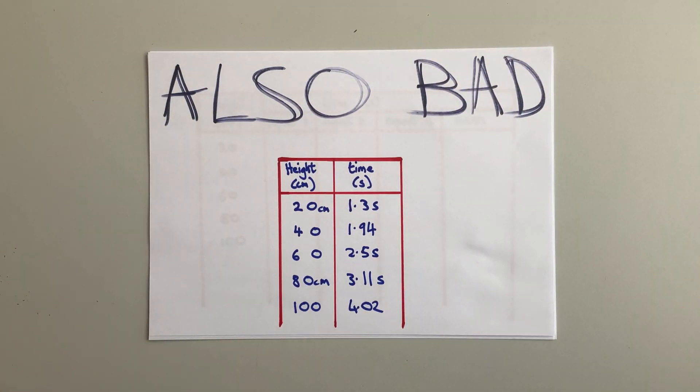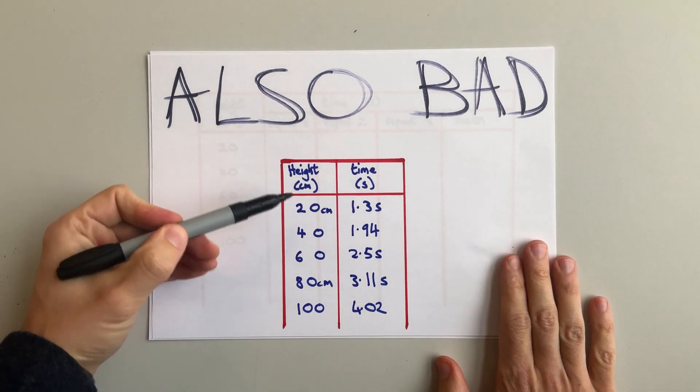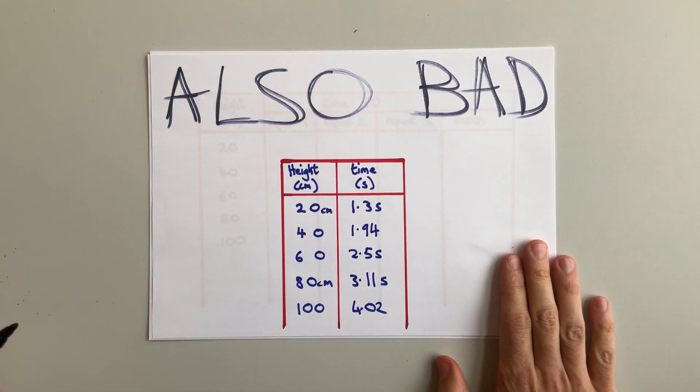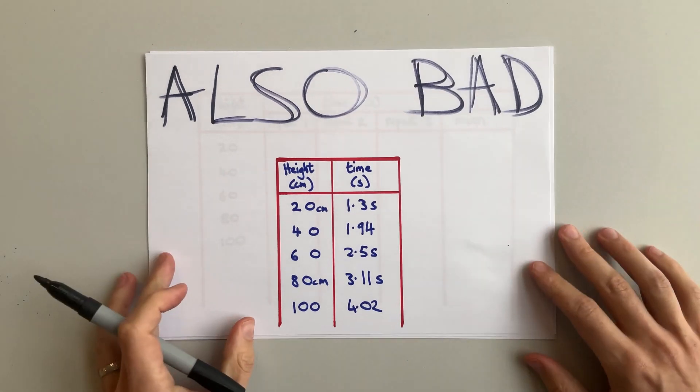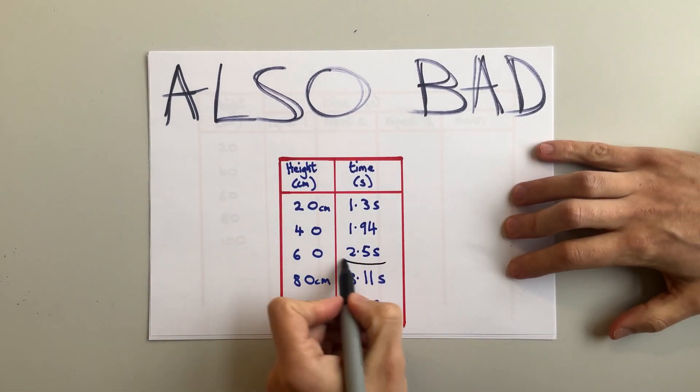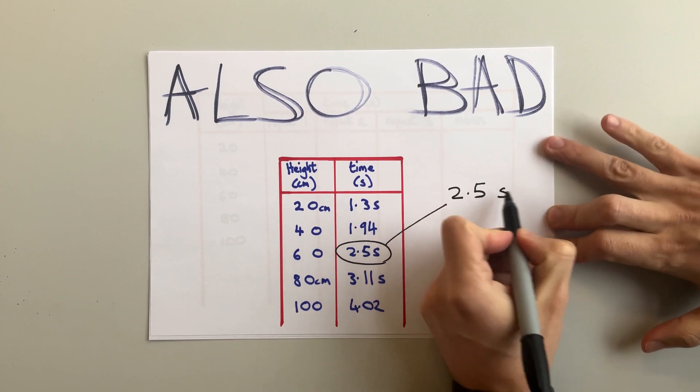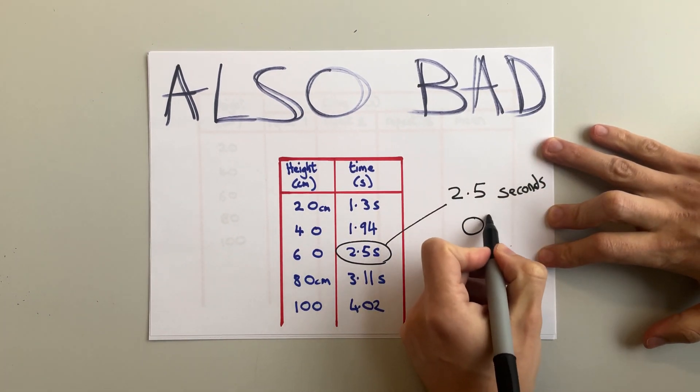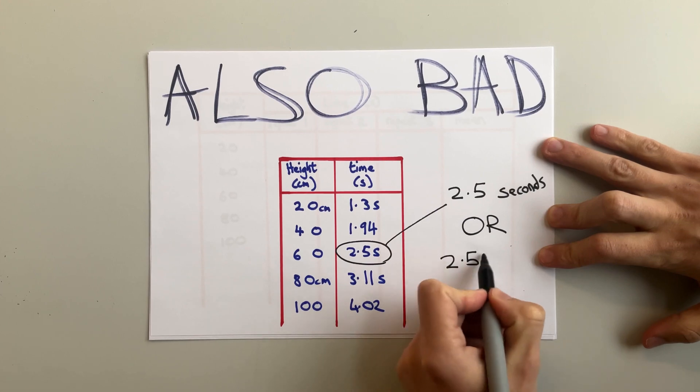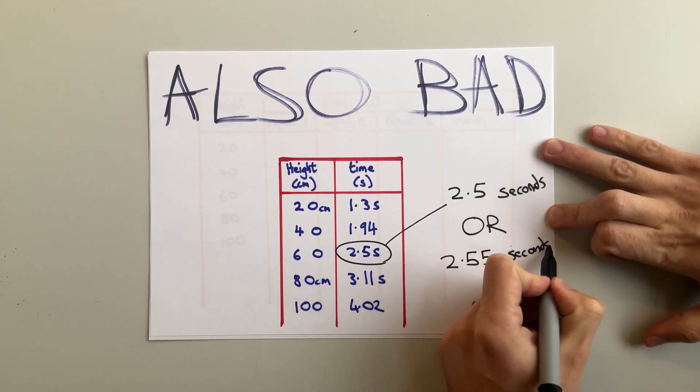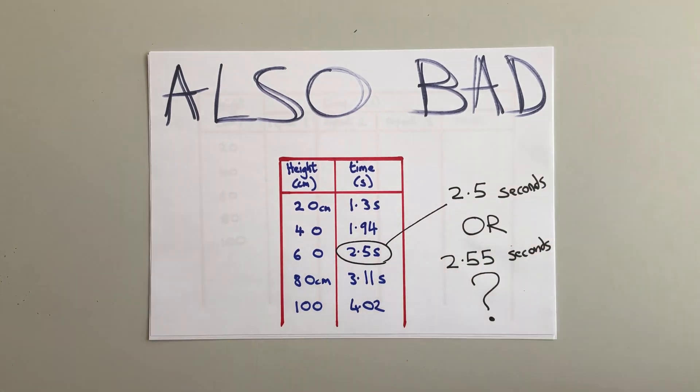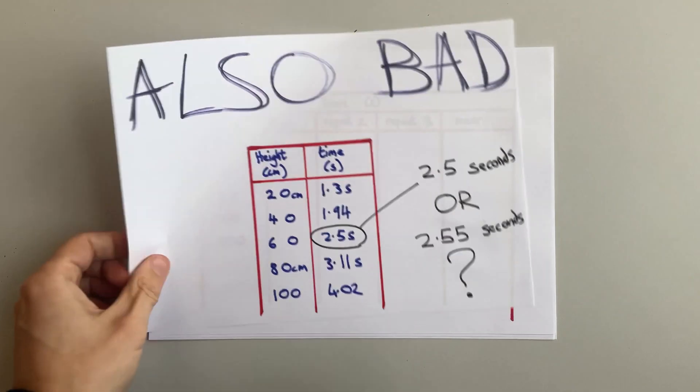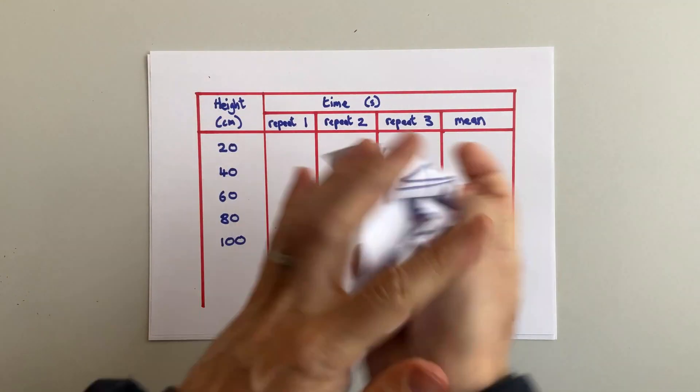The next mistake is to do with units. Units should only ever be in the titles at the top, and never next to the numbers. When it's next to the numbers, it can lead to confusion. So in the example here, you can see sometimes there's a unit there, sometimes there isn't. And then this one here can be confusing. Is this 2.55 seconds, or is it 2.5 seconds? Is that digit on the end an S, or a 5? If you only ever put your units at the top, then this confusion will never happen.